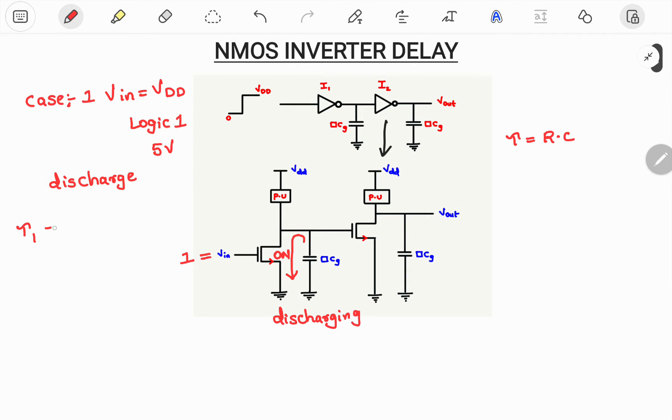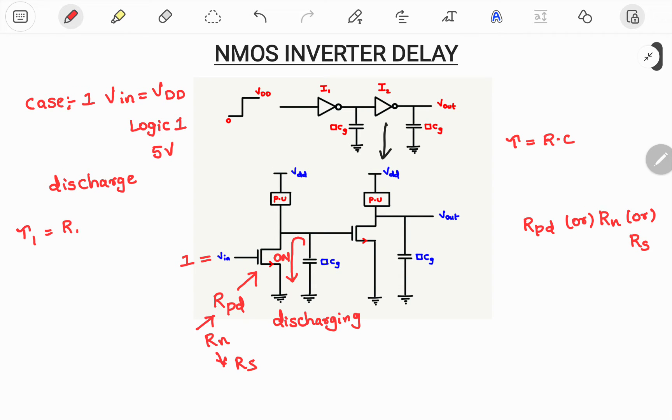So I will consider it as tau 1 which is R. You can consider this as resistor pull down or else you can write it as RN. If not you can write it as RS. So the simple NMOS can be indicated with pull down or else RN or else RS, all are same. So time constant tau 1 is R pull down into CG. So this is our equation number 1.